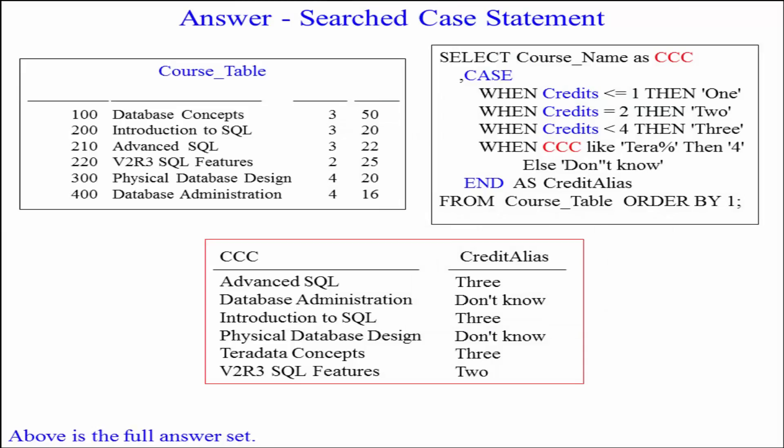As you can see, Advanced SQL was three credits. So it said, hey, listen, is this credits less than or equal to 1? No. Is it equal to 2? No. Is it less than 4? Yes. So, right away, it left.